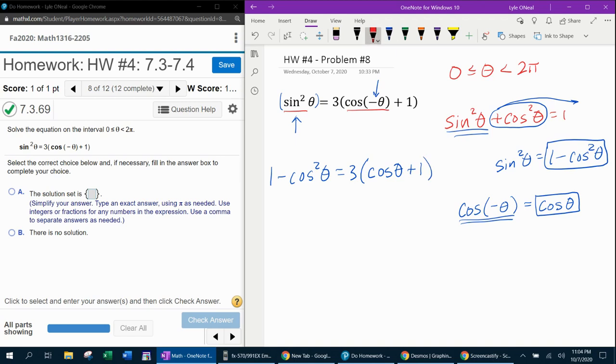Next step. I now have everything in terms of cosine, which is good. But I do have a quadratic since I have a squared term. And just like you learned back in college algebra, if you have a quadratic equation, you need to set it equal to zero. And also the squared term needs to be positive.